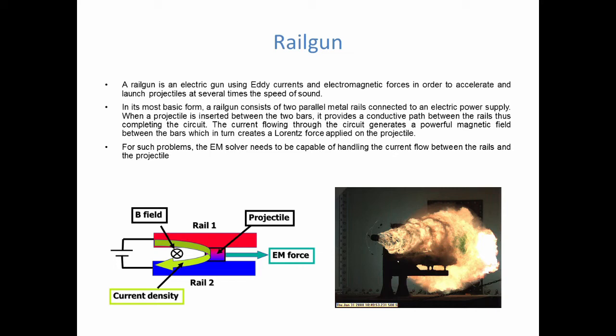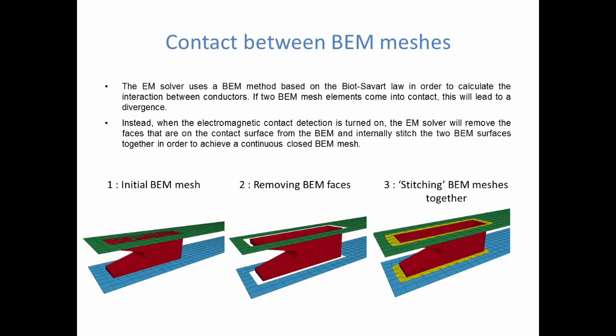Now back to the EM solver. This will be three parts that are in contact and current must be allowed to flow through them — the big difference between this application and the ones we saw in previous videos. This makes it the perfect example to explain how the EM solver handles contact between conductors. For the FEM part, simple extra constraints can be passed to the system. But the difficulty in handling electromagnetic contact lays in the BEM system. The EM solver uses a BEM method to calculate the interaction between conductors based on the Biot-Savart law.